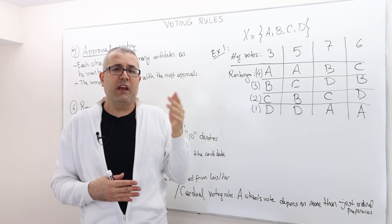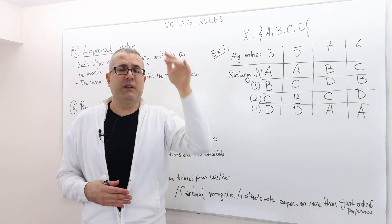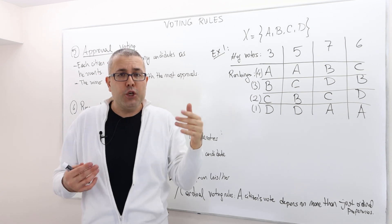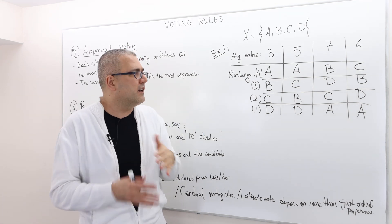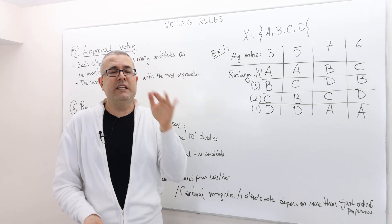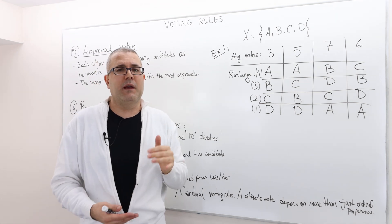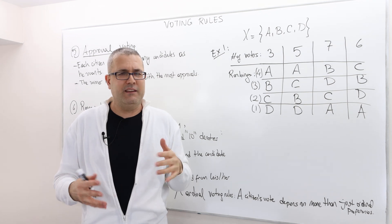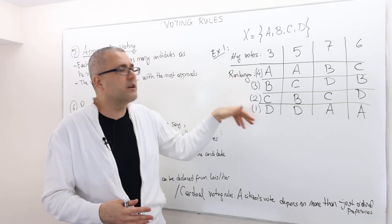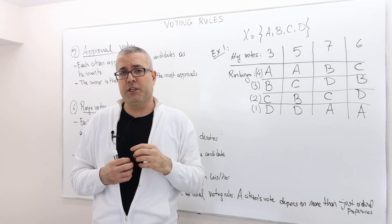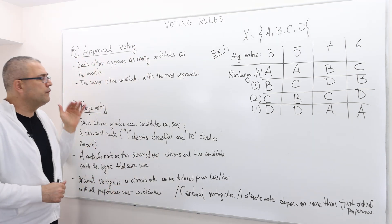some guys may actually think A is superb, like 9 out of 10, but B is like 2 out of 10. I mean, there's a huge difference between A and B. It's not just that B is the second best, but B is actually like a terrible candidate.